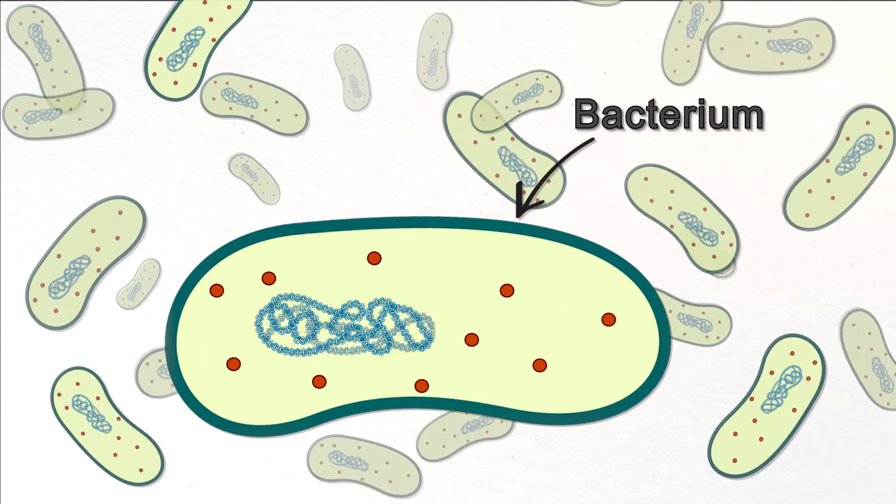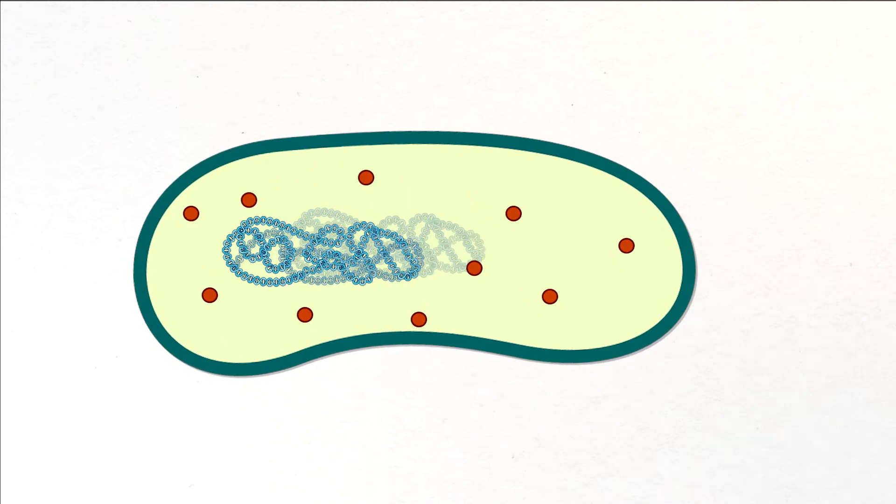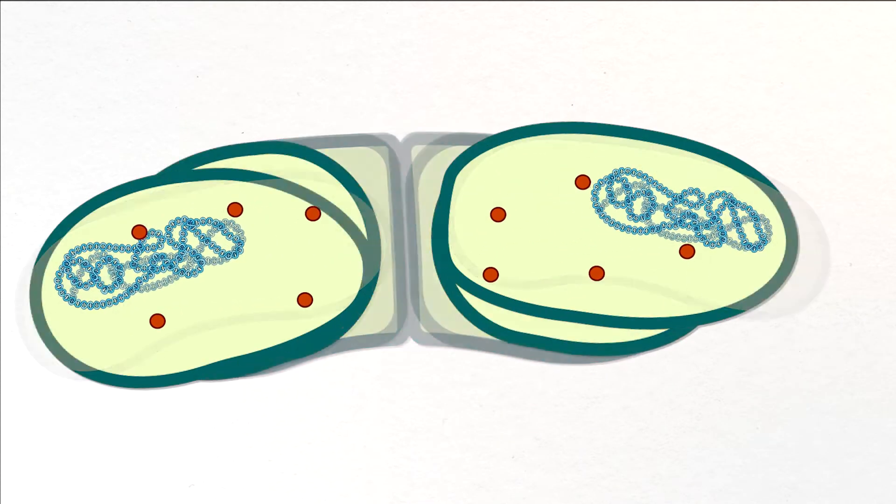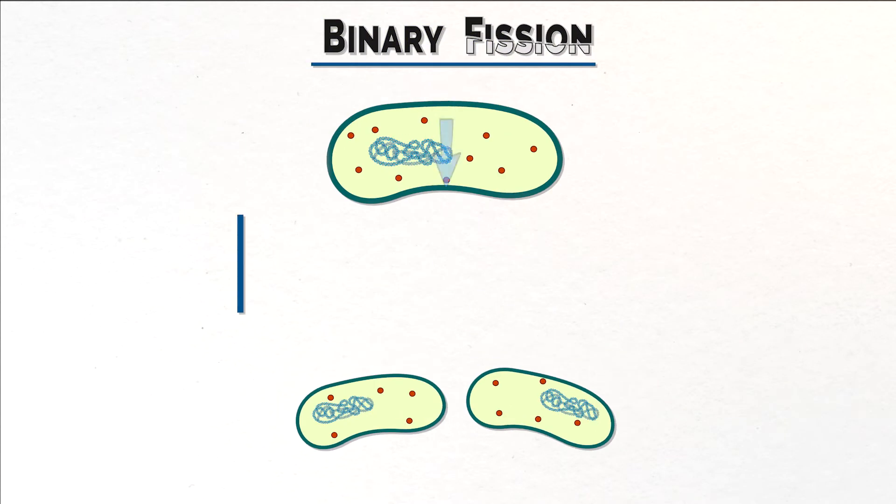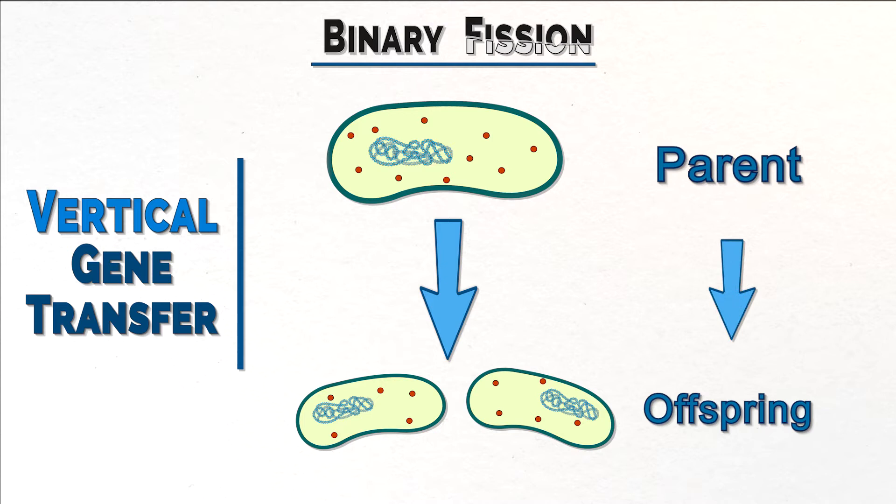Making more bacteria is straightforward. Simply copy your DNA and split it into two. It's called binary fission. Binary fission is vertical gene transfer, parent sharing genes with offspring.